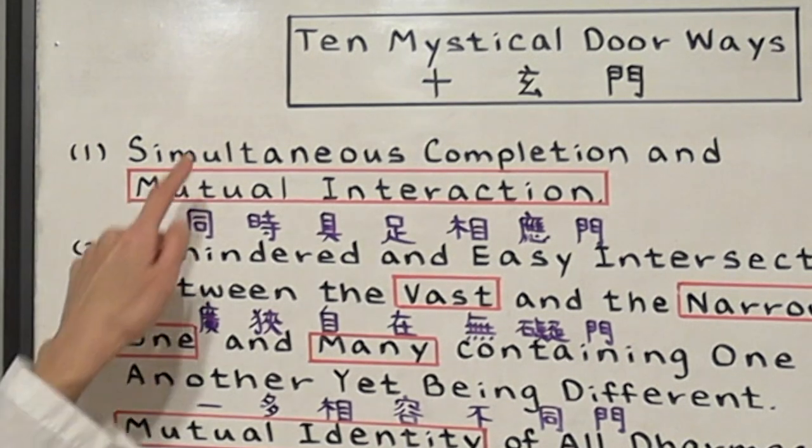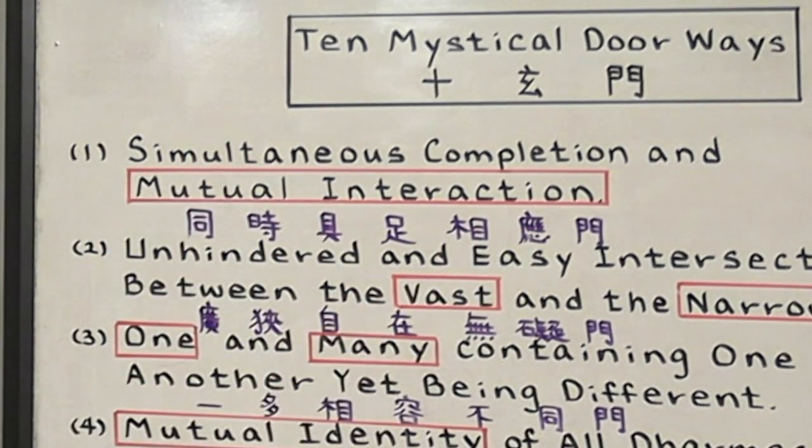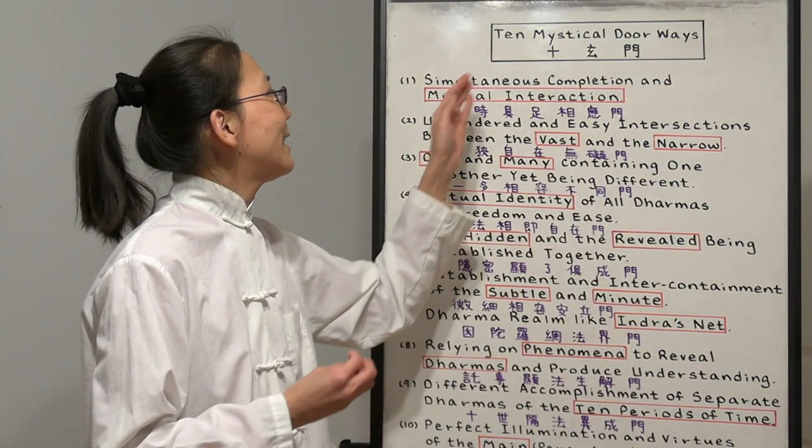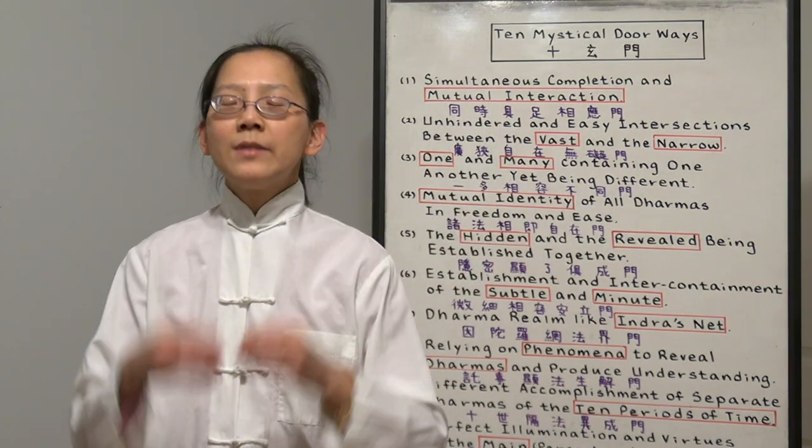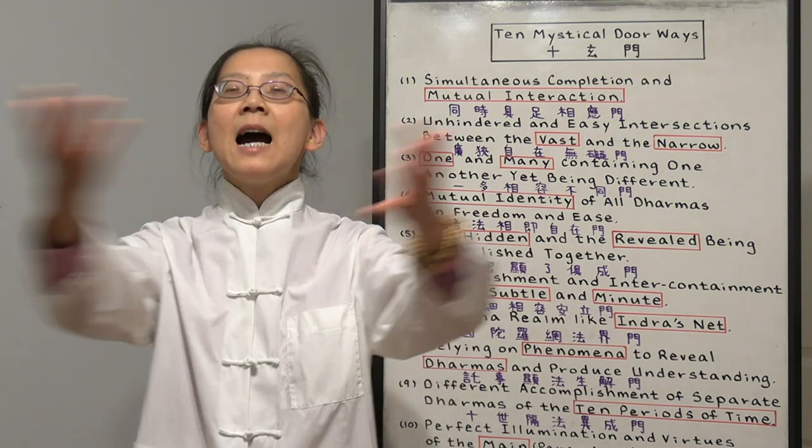Number one, simultaneous completion and mutual interaction. All the phenomena, they're complete at the same time and they're mutually interacting. We often use the example of the one drop of water. It's the same as the entire ocean.